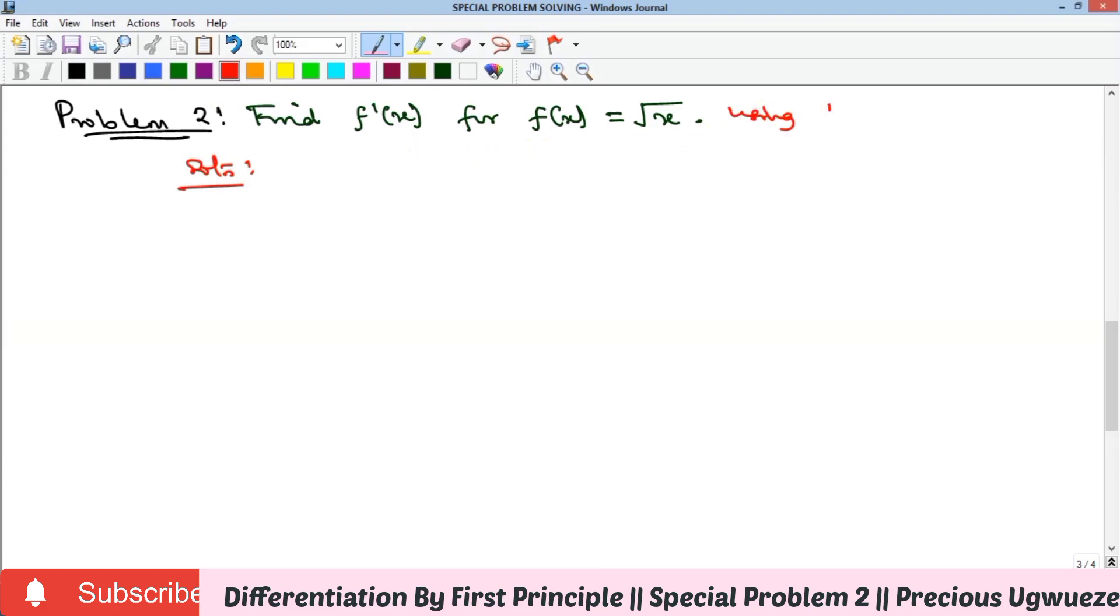Recall our approach: First, state your f(x), which you have been given as √x. Second, find your f(x + h), which is √(x + h). And then next, state your formula.